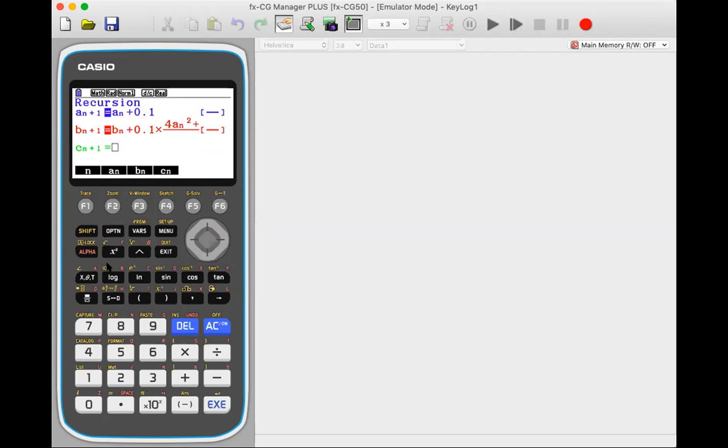For Cₙ₊₁, if you want the derivative, you can put the exact derivative formula: 4Aₙ² plus Bₙ² minus Aₙ times Bₙ over Aₙ². This is your expression for the derivative.